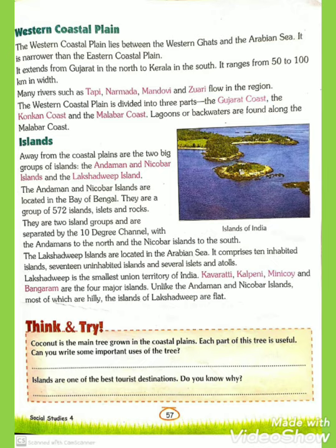Many rivers such as Tapti, Narmada, Mandavi and Zuhari flow in the region. The Western Coastal Plain is divided into three parts: first, the Gujarat coast; second, the Konkan coast; and third, the Malabar coast. Lagoons or backwaters are found along the Malabar coast.